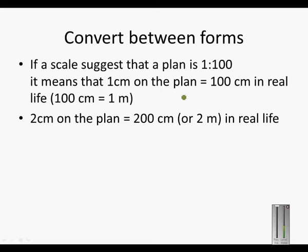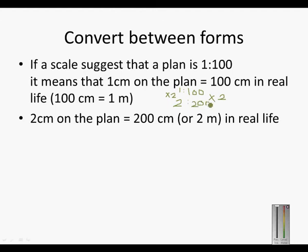So how did we do that calculation? Remember that the ratio is 1 to 100. So on the plan we had 2 cm. How did we get from 1 to 2? We simply multiplied by 2. Now if we multiply 100 by 2, we get 200. 100 times 2 is 200, and that is how we got that 2 cm on the plan is equal to 200 cm in real life.